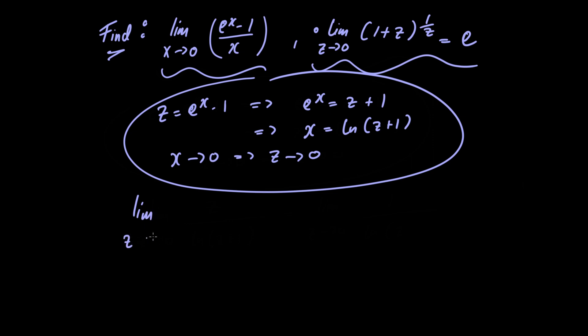We have the limit as z approaches 0 of z divided by ln(1 + z). We can rewrite this as the limit as z approaches 0 of 1 divided by [ln(1 + z)/z].